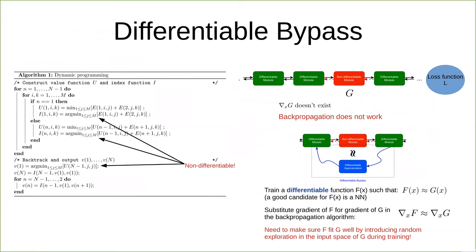The active contour algorithm is non-differentiable. Therefore, we cannot do back-propagation directly to train EDB-CNN. We introduce a novel general-purpose concept called a differentiable bypass to tackle this problem.